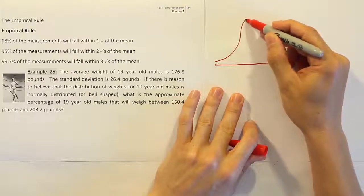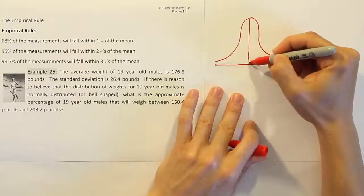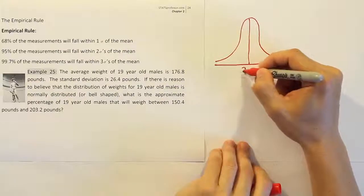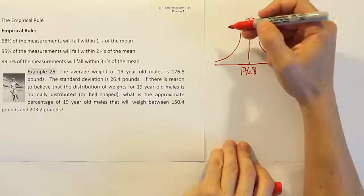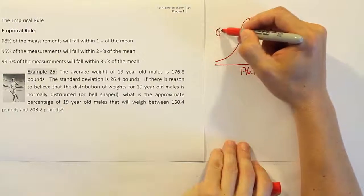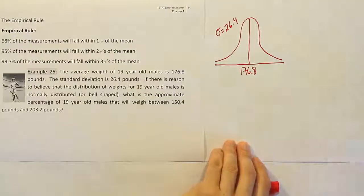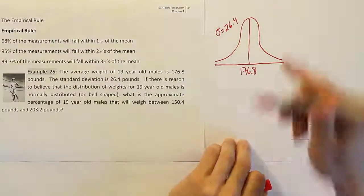So instead, I'll draw a bell curve, and I'll just say, okay, looking at this bell curve, I'm going to put the mean right in the middle. The mean, it says, is 176.8, right? 176.8. And then they tell us the standard deviation is 26.4. 26.4. So let me take those pieces of information in and use them to start adding more places on this drawing.